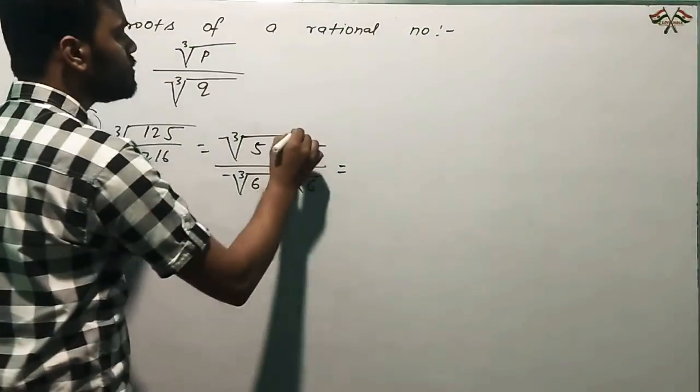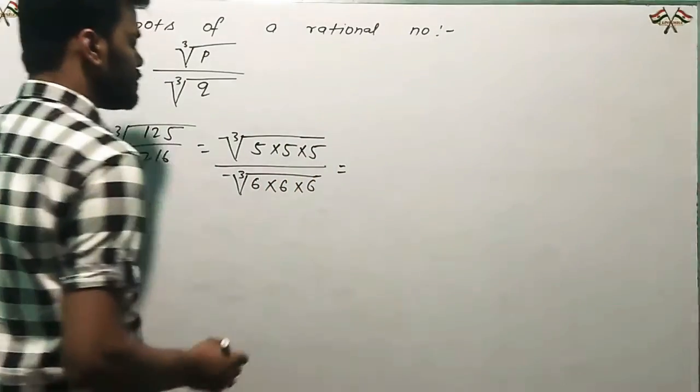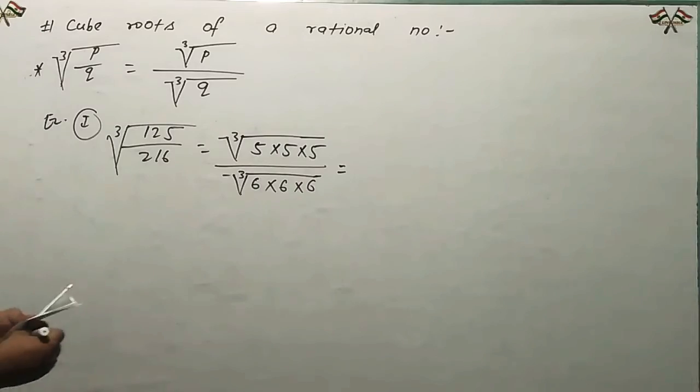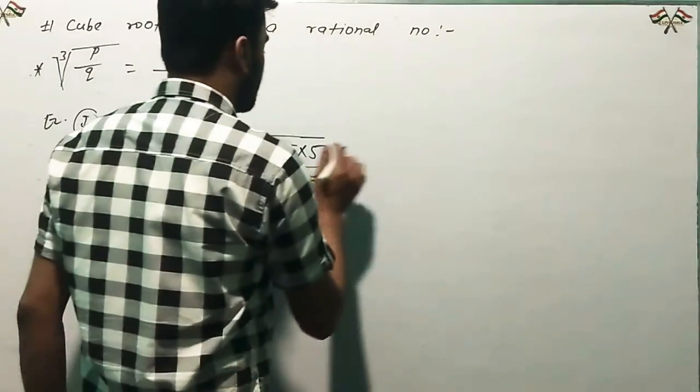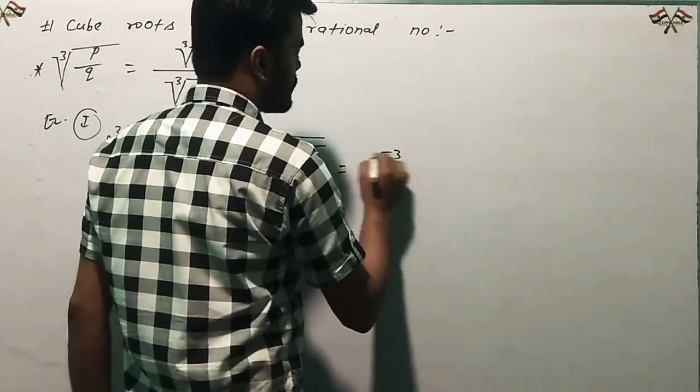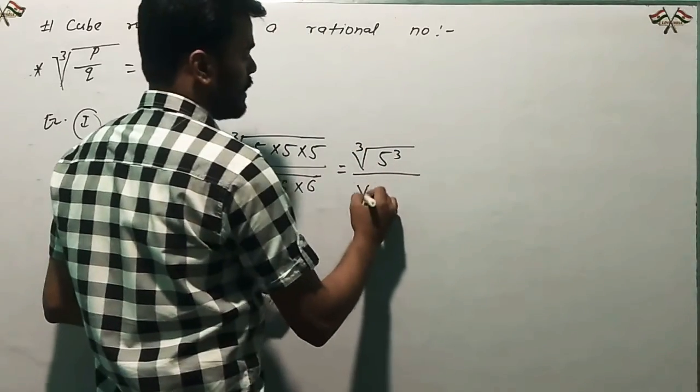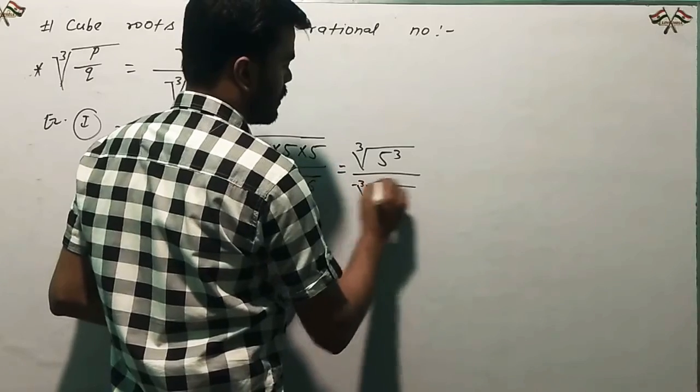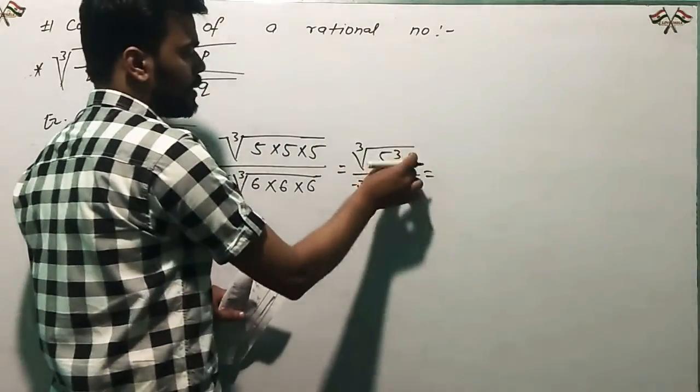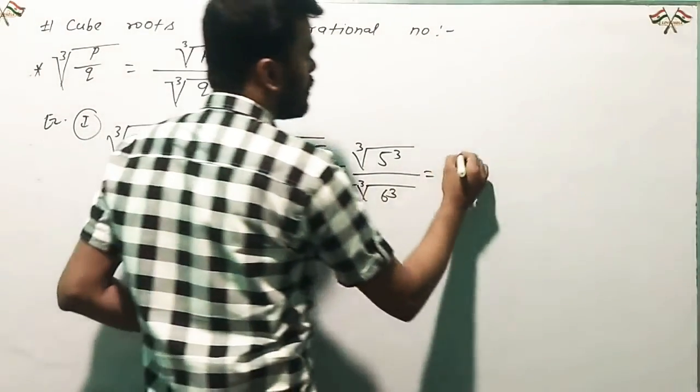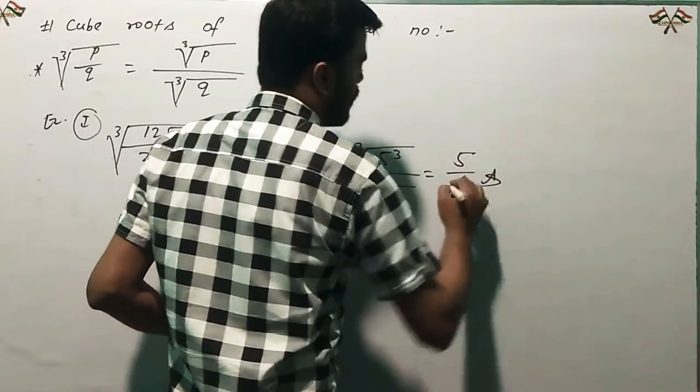According to these numbers, we've separated them. You can write this as cube root of 5 cubed over cube root of 6 cubed. The powers will have cancellation, giving you 5 by 6, that is your answer.